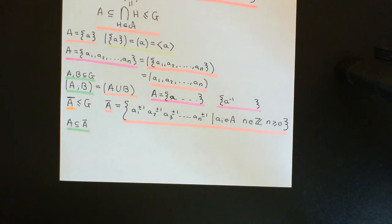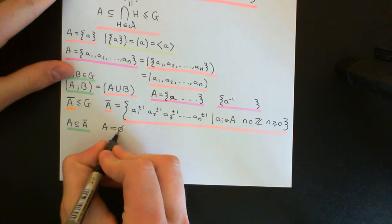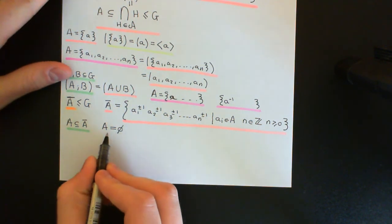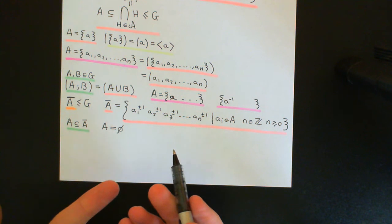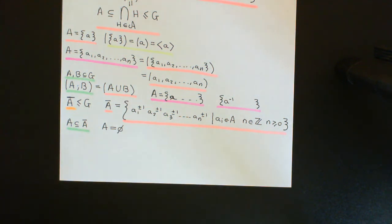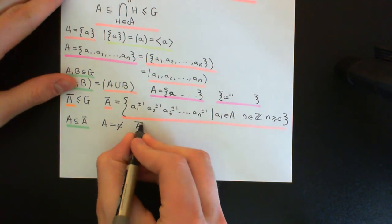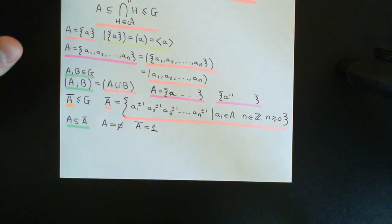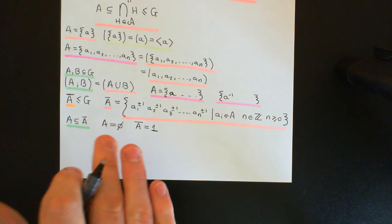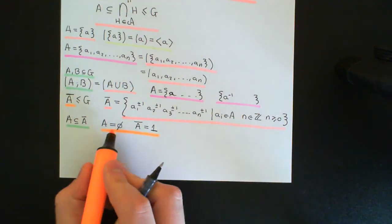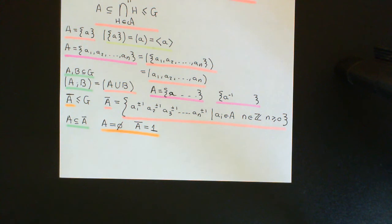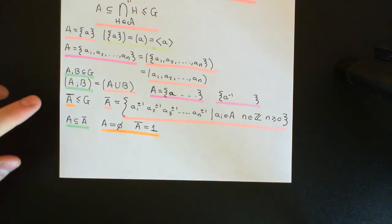The other comment: what if the subset A is equal to the empty set? You can't do this if A is the empty set — you've got absolutely no elements to construct your finite products out of. So we make a definition: we define the closure of the empty set to be equal to the trivial subgroup. We want the closure of a subset always to equal a subgroup, which is why we make that definition. So the closure of any subset of A, whether it's an empty set or not, is always going to be a subgroup.